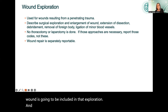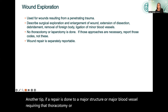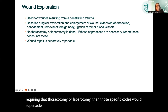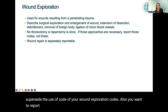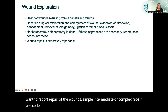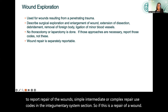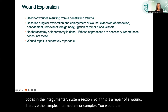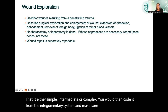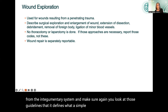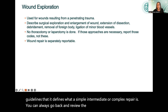If a repair is done to a major structure or major blood vessel requiring thoracotomy or laparotomy, those specific codes supersede the wound exploration codes. Also, report repair of wounds — simple, intermediate, or complex — using codes in the integumentary system section. Make sure you review the guidelines that define what a simple, intermediate, or complex repair is. You can always go back and review the integumentary video as well.